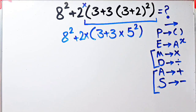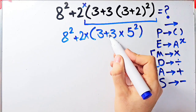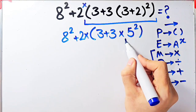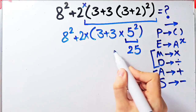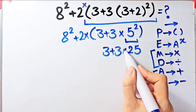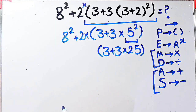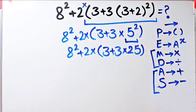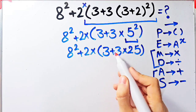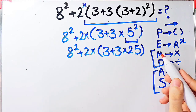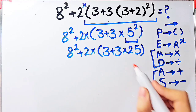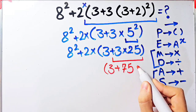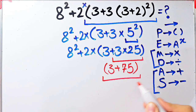Again we simplify the parentheses. Inside these parentheses we have addition, multiplication, and exponent. First we do the exponent: 5 to the power of 2 equals 25. Now we have 3 plus 3 times 25 inside the parentheses. Next, multiplication has higher priority than addition, so we do 3 times 25 equals 75. Now we have 3 plus 75 inside the parentheses. 3 plus 75 equals 78.